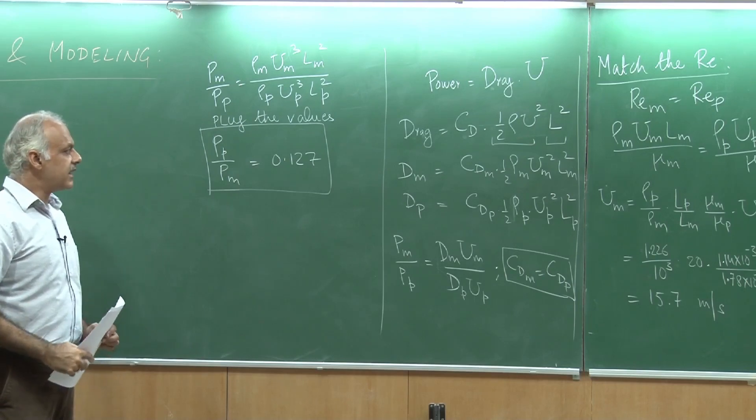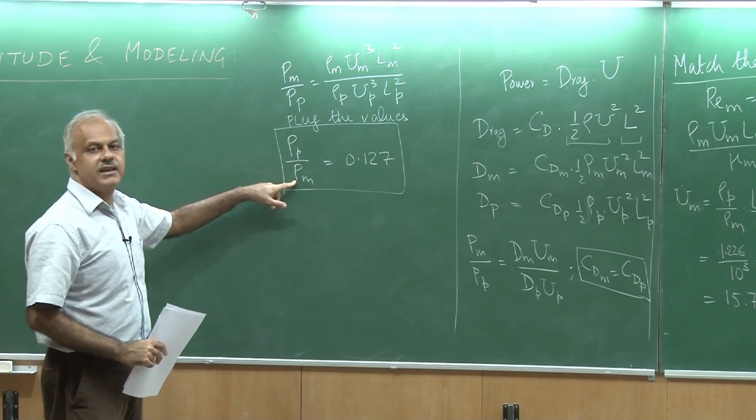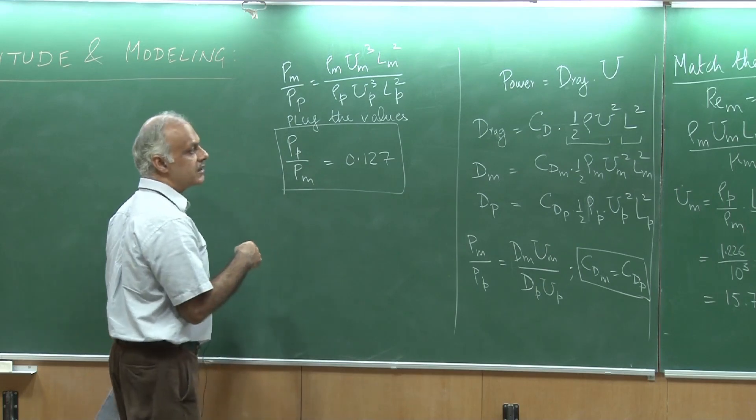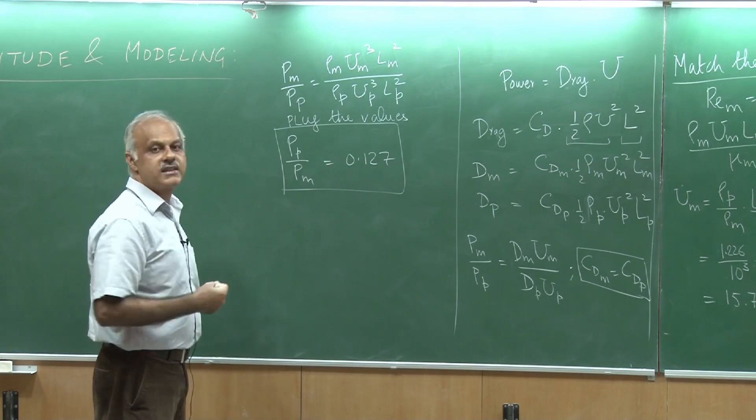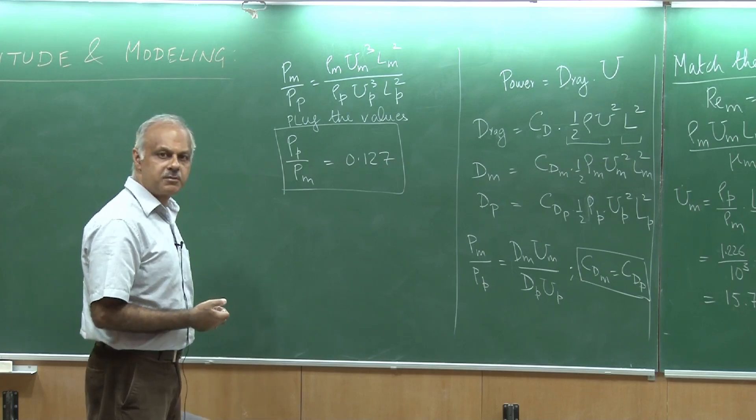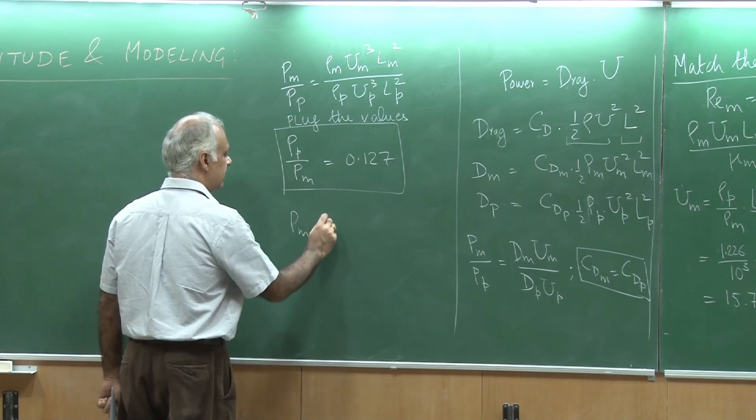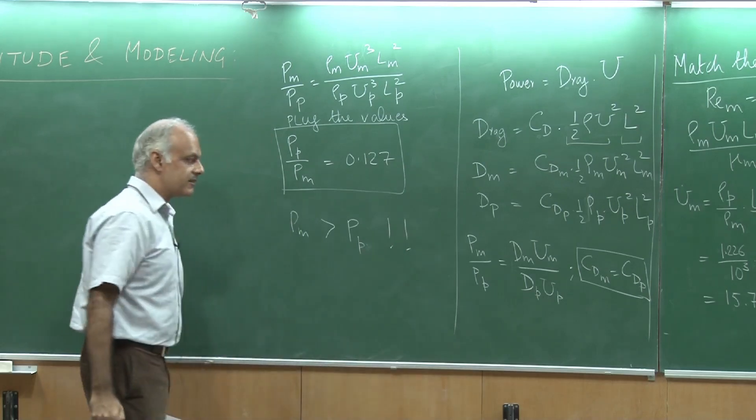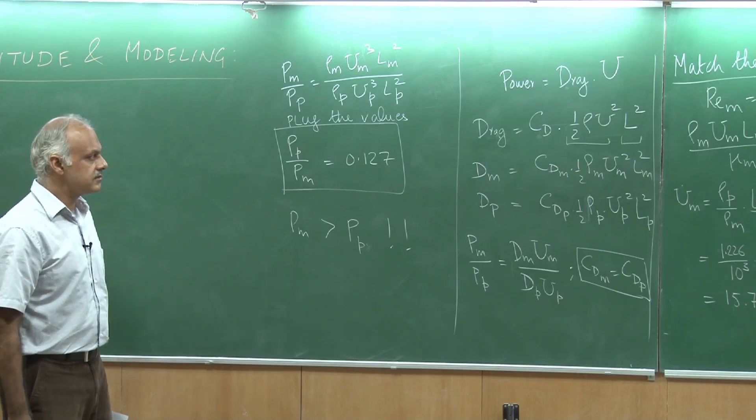The bottom line is that I would actually spend more power in towing the model. Although it is a 1/20th scale model, because I am towing it in water and the speed is larger - 15.7 m/s as opposed to 10 m/s - P model is larger than P prototype, which is a little bit surprising, but that is what it is.